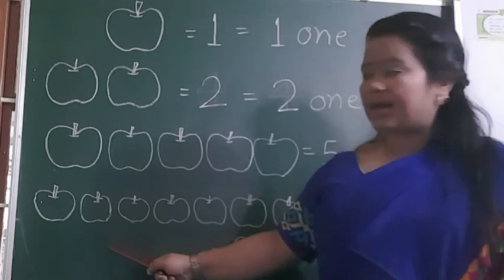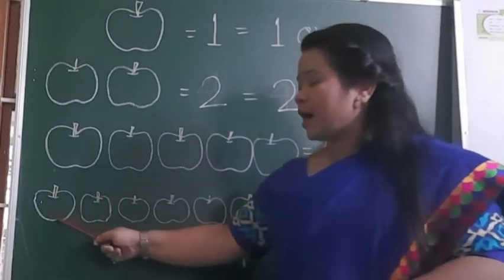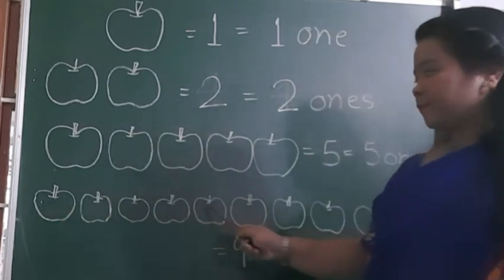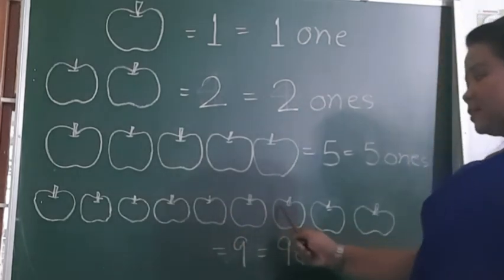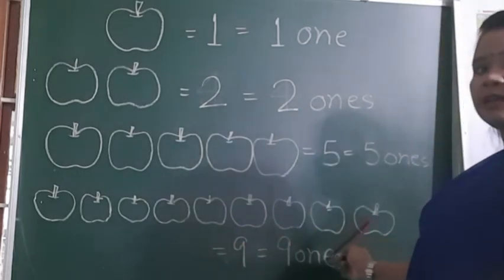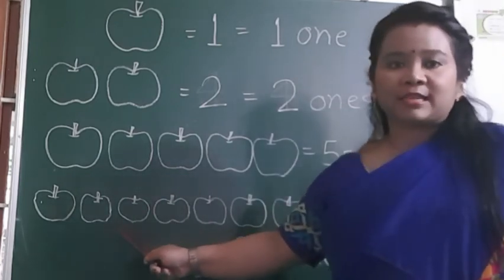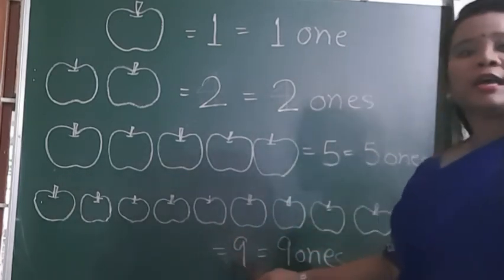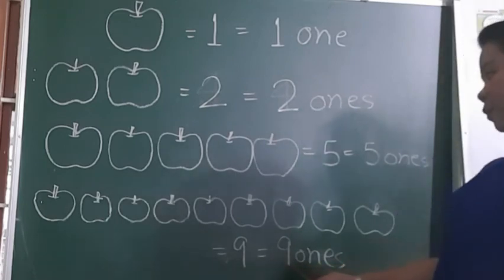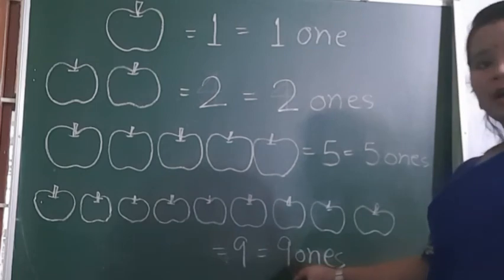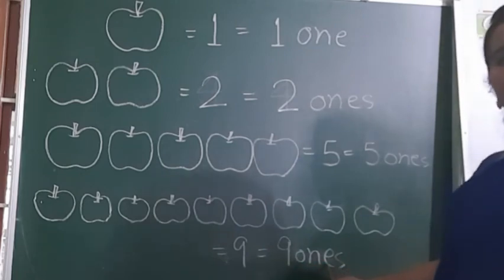So here I have lots of apples now. Let's count how many apples: one, two, three, four, five, six, seven, eight, nine. Nine apples — I wrote 9. And how many ones do I have? I have nine ones.